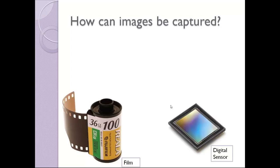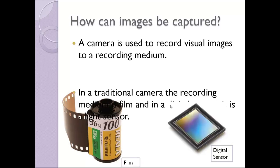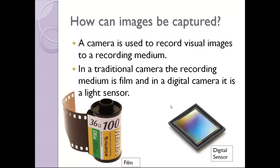How can images be captured? A camera is used to record visual images to a recording medium. In a traditional camera, the recording medium is film, and in a digital camera, it is a light sensor.